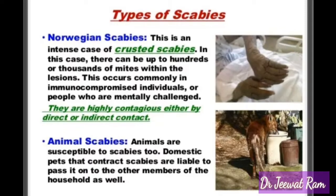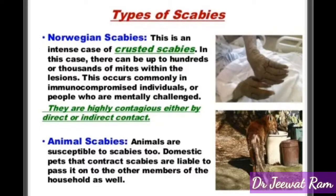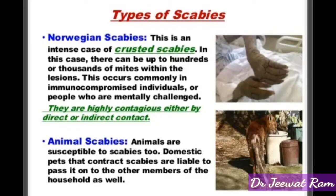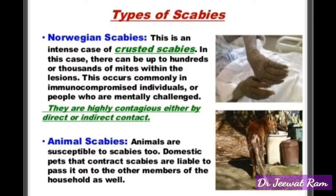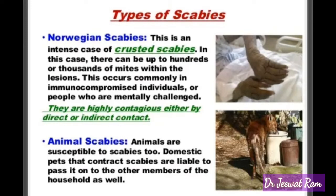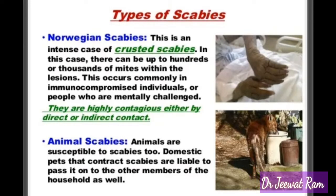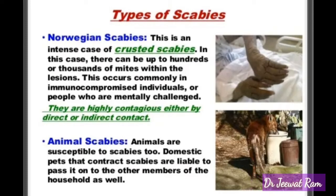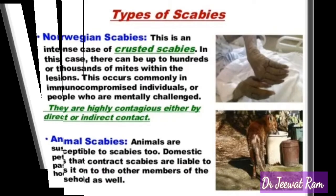Norwegian scabies occurs commonly in immunocompromised individuals or people who are mentally challenged. They are highly contagious either by direct or indirect contact. Animal scabies: animals are susceptible to scabies too. Domestic pets that contract scabies are liable to pass it on to other members of the household as well.